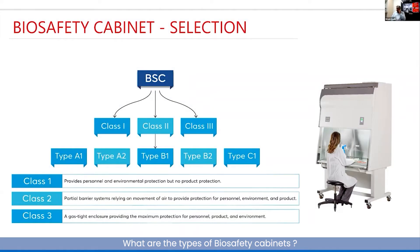Biosafety cabinets are classified into three distinct types: Class 1, Class 2, and Class 3. Within Class 2 there are subtypes A1, A2, B1, B2, and C1, which we will discuss as we go along to the next slide. Class 3 is the highest level of protection.